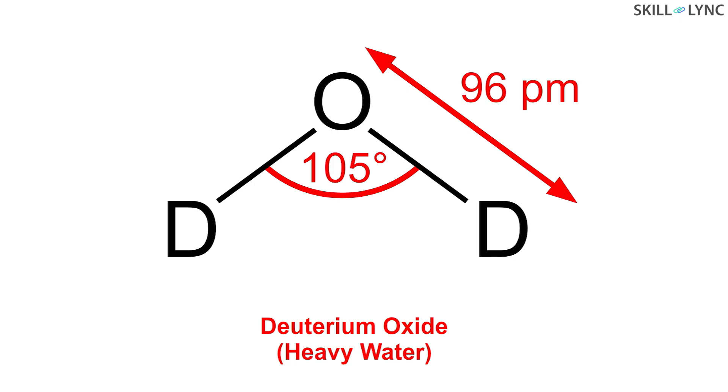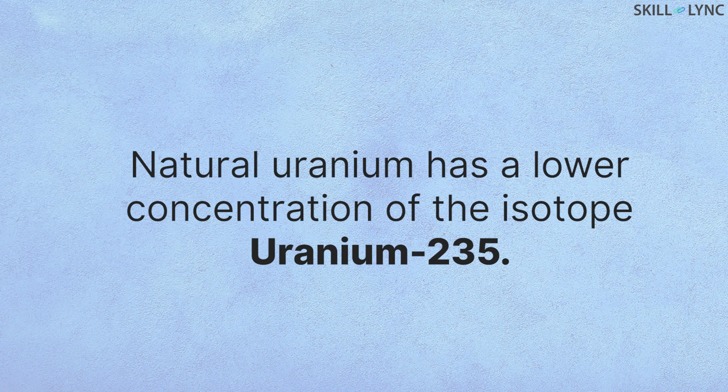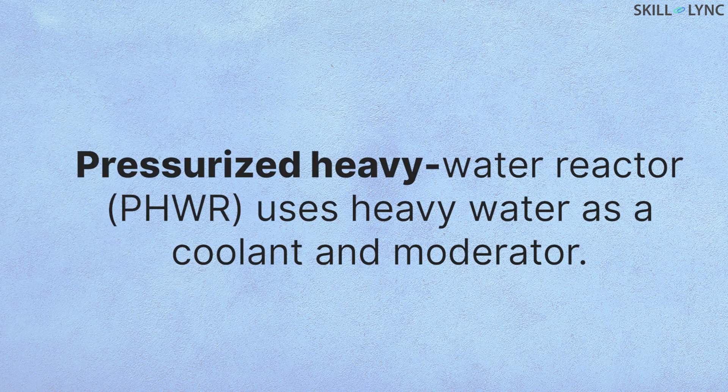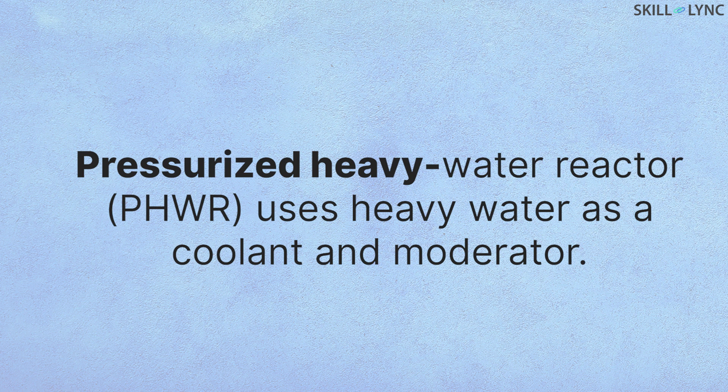More neutrons will be available for fission. In such a case, natural uranium can be used as it has a lower concentration of uranium-235. The nuclear reactors that use heavy water as a coolant and moderator are called pressurized heavy water reactors.